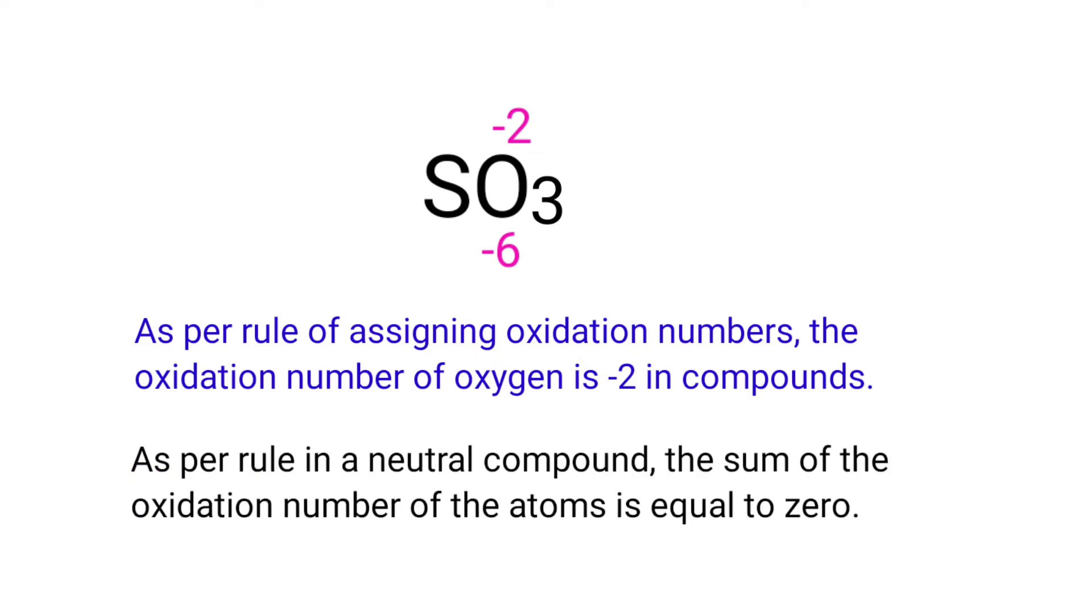As per rule in a neutral compound, the sum of oxidation numbers of atoms is equal to 0. So the numbers along the bottom must add up to 0.